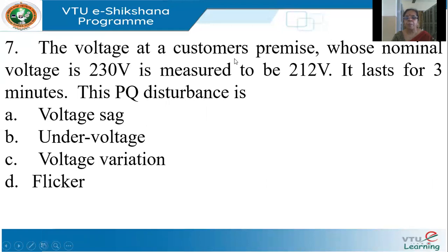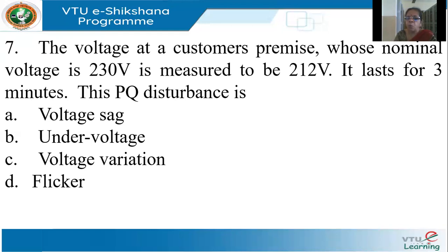The voltage at a customer's premises, whose normal voltage is 230 V, is measured to be 212 V lasting for three minutes. Normally, plus or minus 10% is permitted by the utility — that is plus or minus 23 volts — so 212 V is within the limit. There is no violation, so it is not a sag, under-voltage, or anything. It lasts three minutes so it is not flicker. It is simply a voltage variation — in fact, it's not even a power quality disturbance.